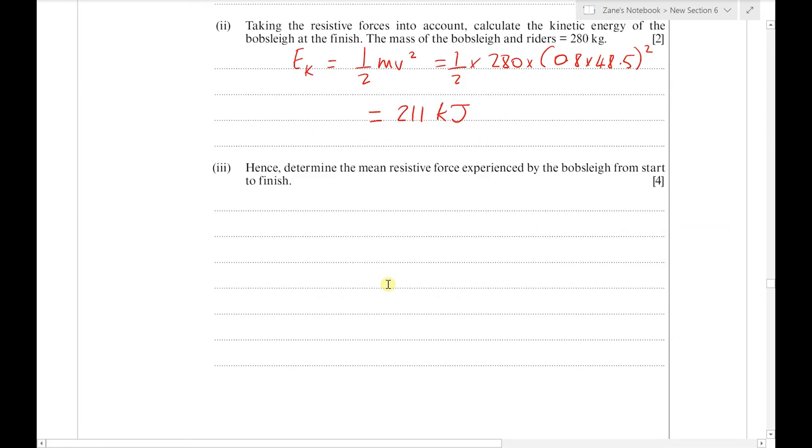Hence determine the mean resistive force experienced by the bobsleigh from start to finish. We're using the work-energy theorem to find how much energy was lost and equate that to the work done by frictional forces. The energy lost equals the initial energy minus that 211 kJ we just worked out.